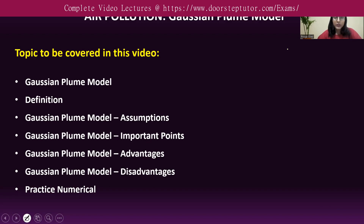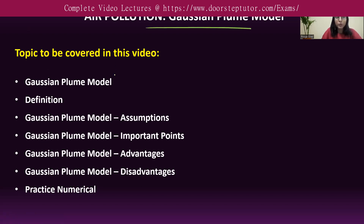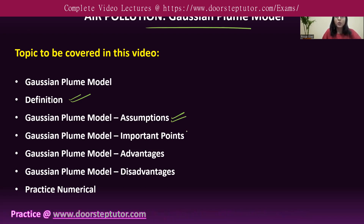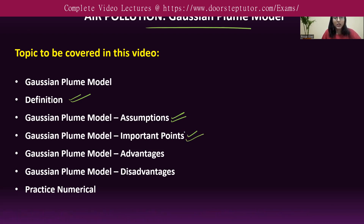Hello everyone. Today we will be doing a very important topic under air pollution: the Gaussian plume model. We will cover what the Gaussian plume model is, certain assumptions used in calculations, important points for calculating air pollutant concentration, advantages and disadvantages, and we will also practice a numerical at the end. So let us begin.